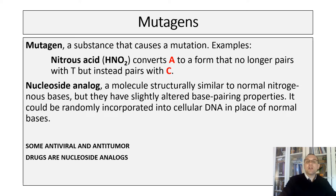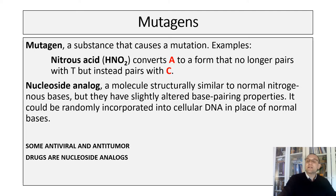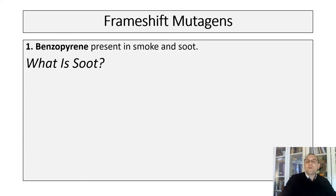A mutagen is a substance that causes a mutation. One example is nitrous acid, which converts adenine into a form that no longer pairs with thymine but instead pairs with cytosine. A nucleoside analog is a molecule structurally similar to a normal nitrogenous base but with slightly altered base pairing properties — it can be randomly incorporated into cellular DNA in place of a normal base. Some antiviral and anti-tumor drugs are nucleoside analogs.